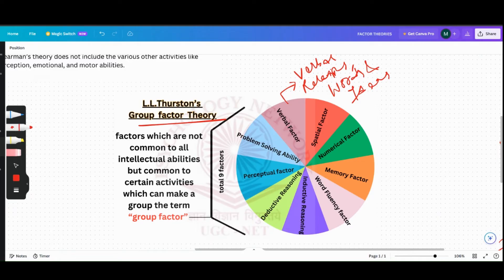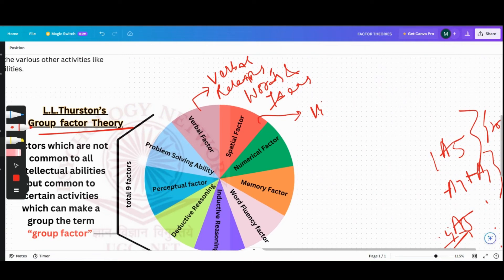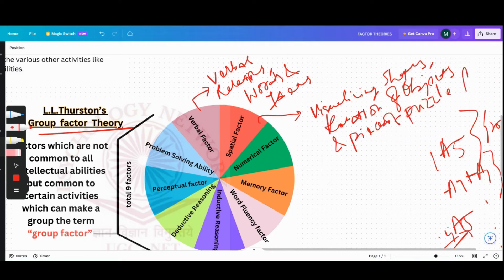Then the Spatial Factor: Spatial Factor is relating to visualizing shapes, rotation of objects, and pieces of puzzle fit together.